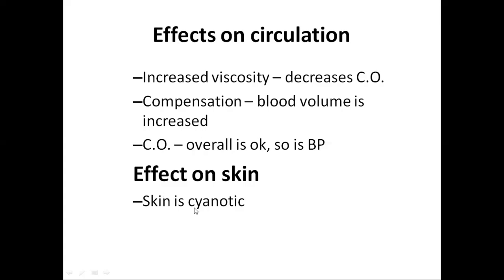The effect of polycythemia on the skin: the skin will be cyanotic because of sluggish blood flow in the subpapillary venous plexus, leading to decreased oxygenation of the blood. The increased deoxygenated blood produces a bluish-purplish hue, resulting in cyanosis of the skin.